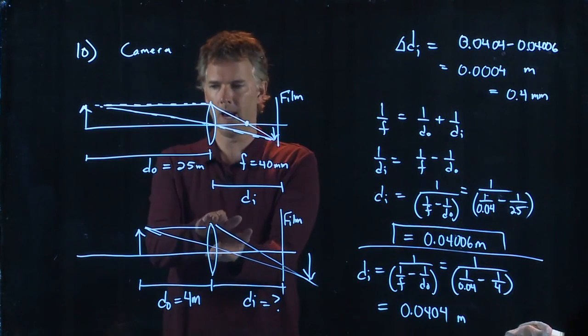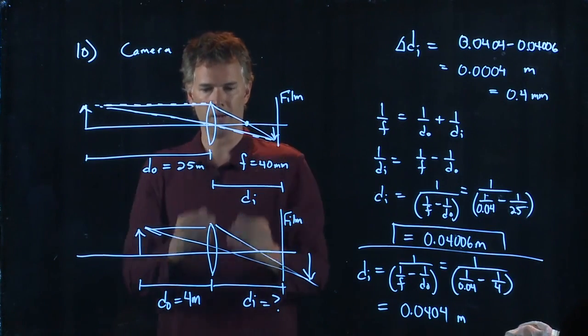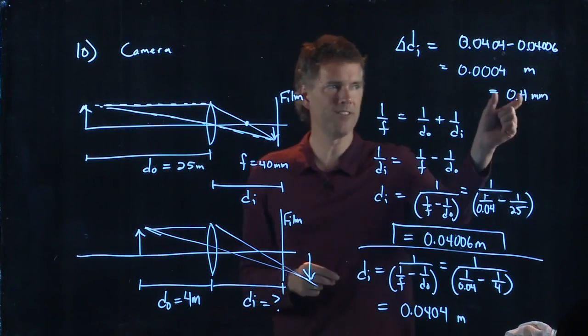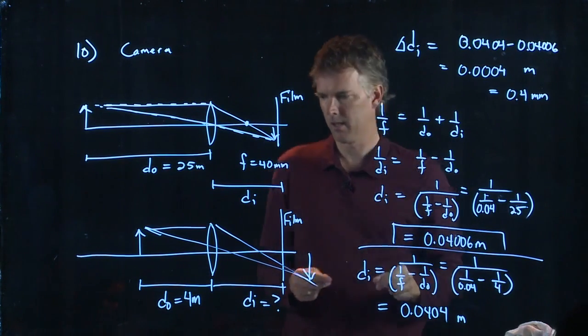And this is kind of a neat idea, right? If I have a camera and I want to look at something very far away, 25 meters, I set it up. But now when that object is only four meters away, I only have to change that lens position by a fraction of a millimeter, a half a millimeter.